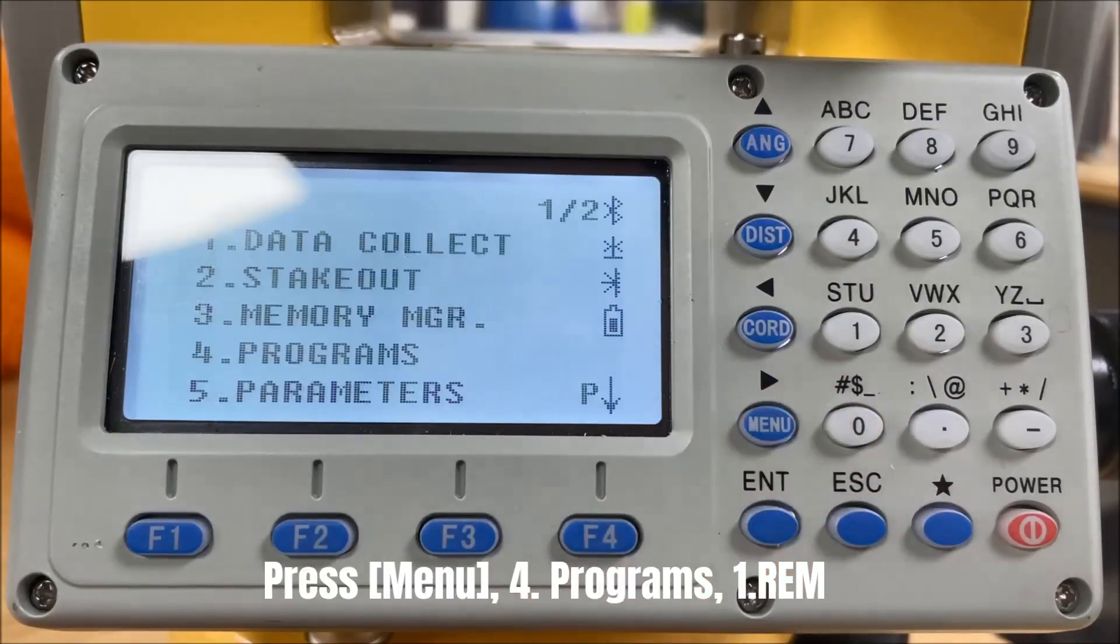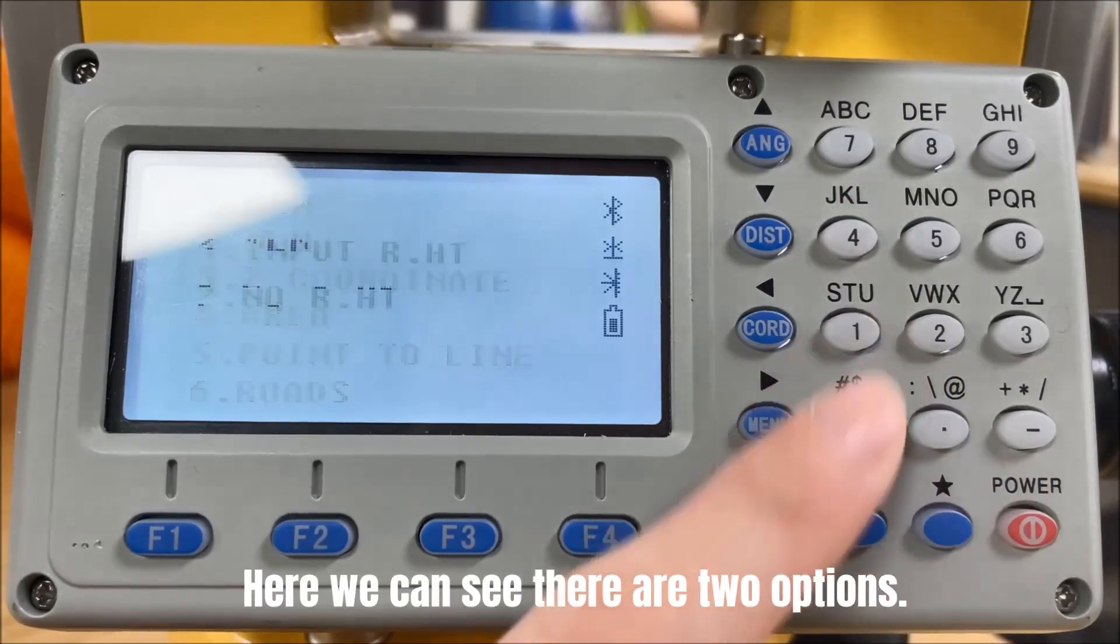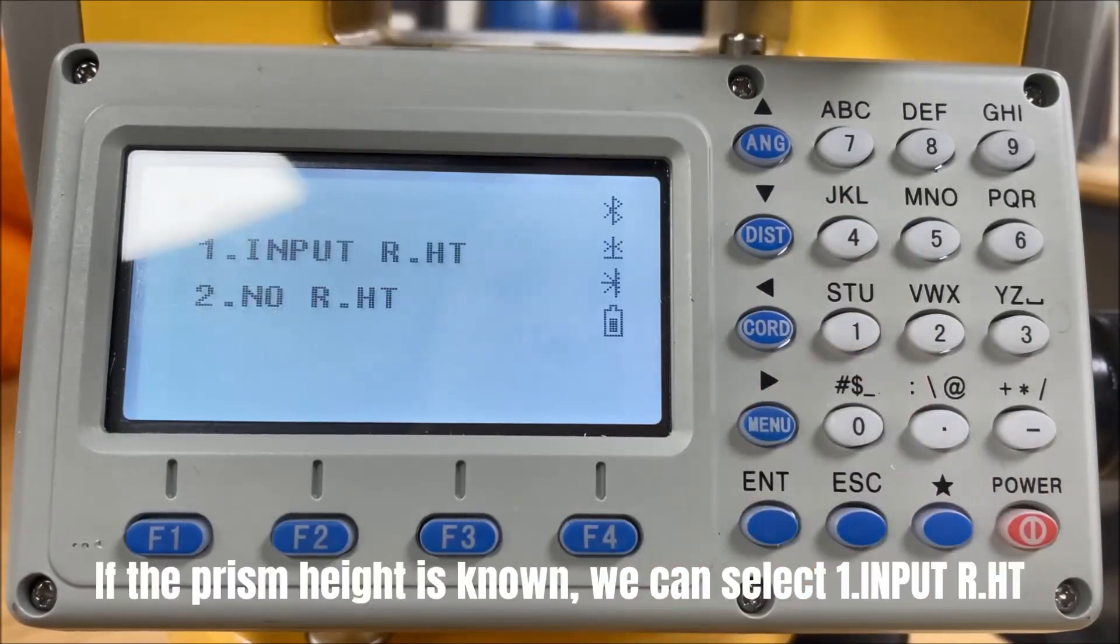Press menu, program, and select the first one. Here we can see there are two options. If the prism height is known, we can select the first one.